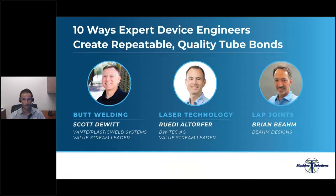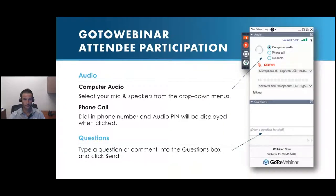You have joined the presentation listening using your computer speaker system by default. If you prefer to join over the telephone, just select telephone in the audio pane and the dial-in information will be displayed. You have the opportunity to submit text questions to today's presenters by typing your questions into the questions pane of the control panel. You may send your questions at any time during the presentation. We will collect these and address them during the Q&A session at the end of each presentation.